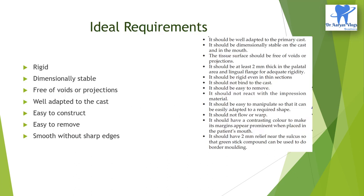The ideal requirements of a custom tray are: it should be rigid; it should be dimensionally stable on the cast as well as in the mouth; the tissue surface should be free of voids or projections; it should be well adapted to the primary cast; it should be easy to construct and remove; and it should be smooth without sharp edges.